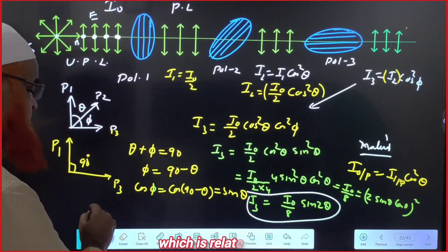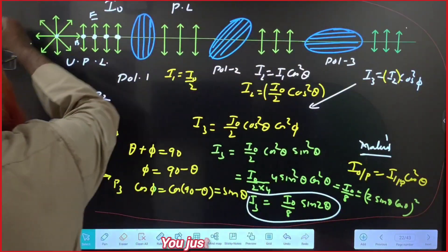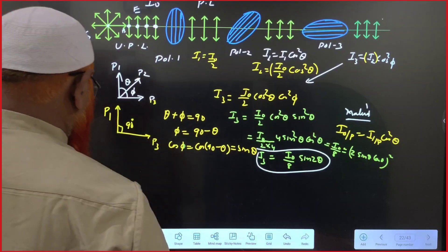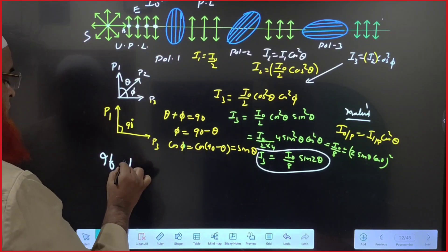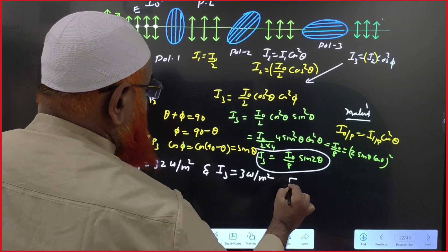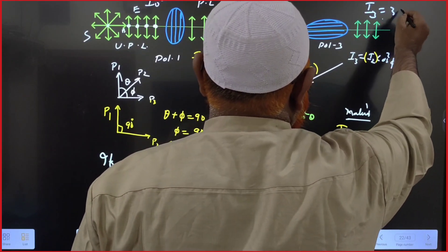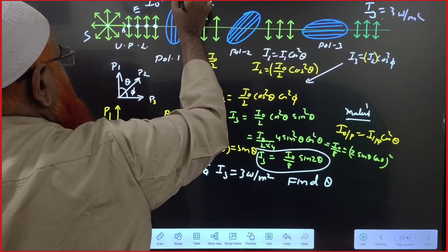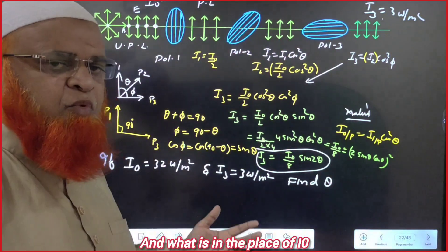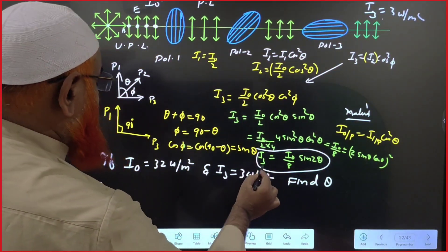We shall now solve a related problem. Given: I0 = 32 W/m² and I3 = 3 W/m². Find theta. Using I3 = (I0/8)·sin²(2θ): substituting I3 = 3 and I0 = 32.